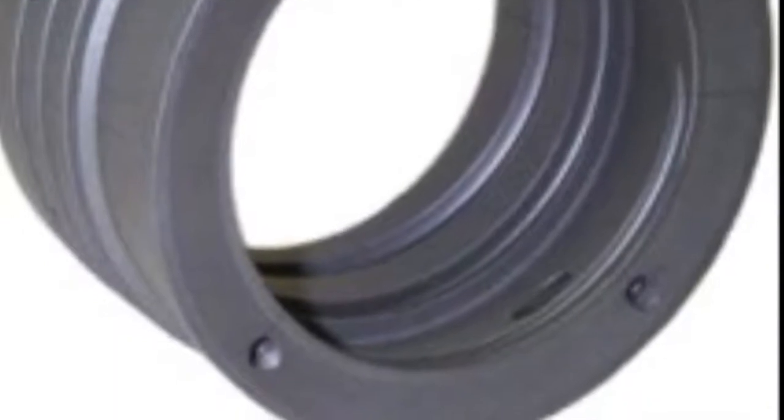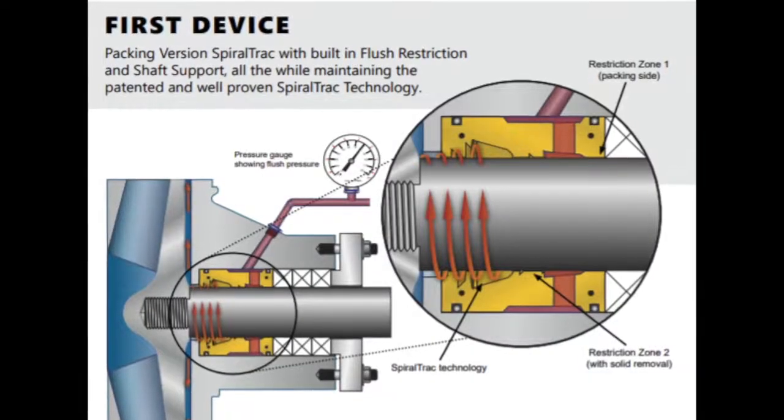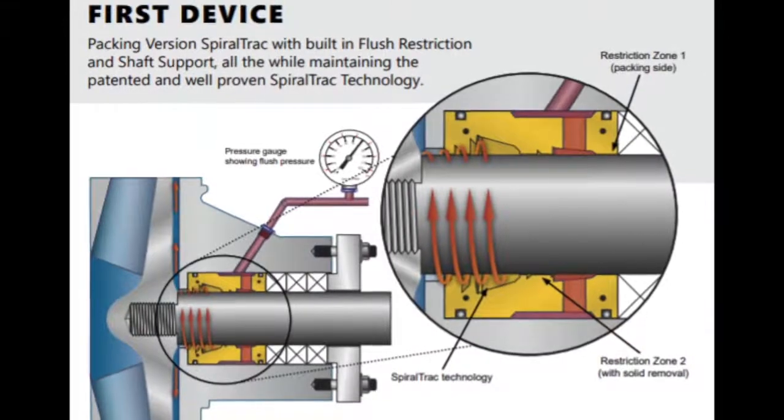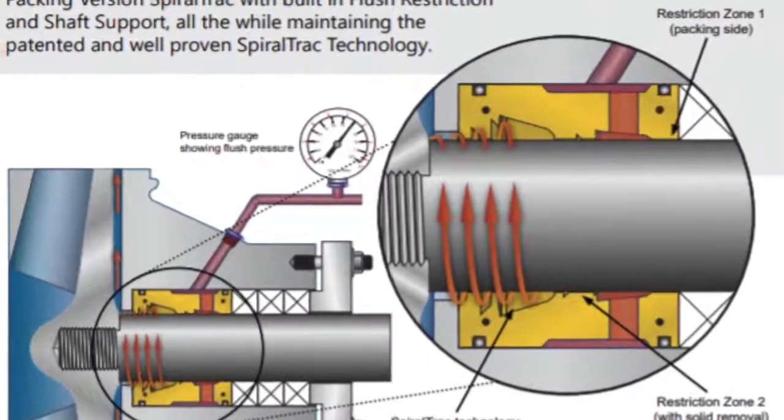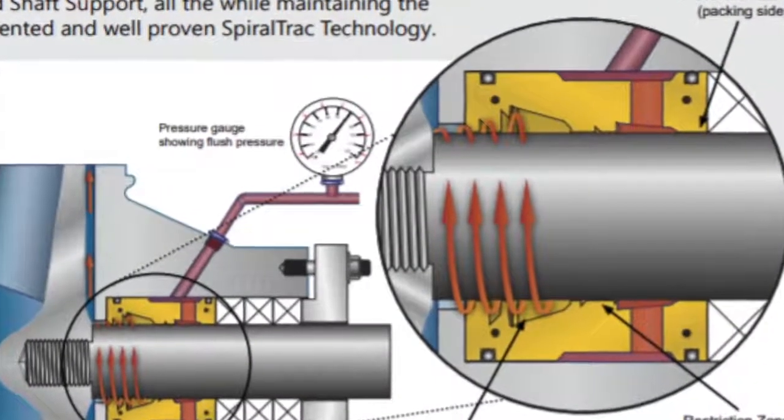There are two types of spiral tracks for packed pumps. One is the type P that does not lower flush water unless a restriction device is installed on the flush. And the second is the FIRST that has a built in flush restriction.